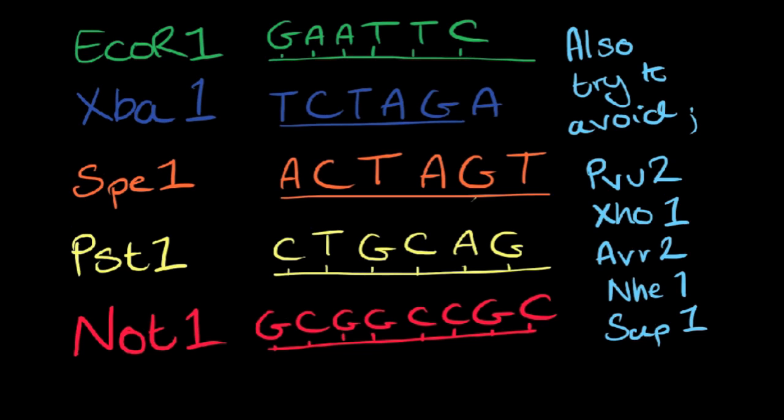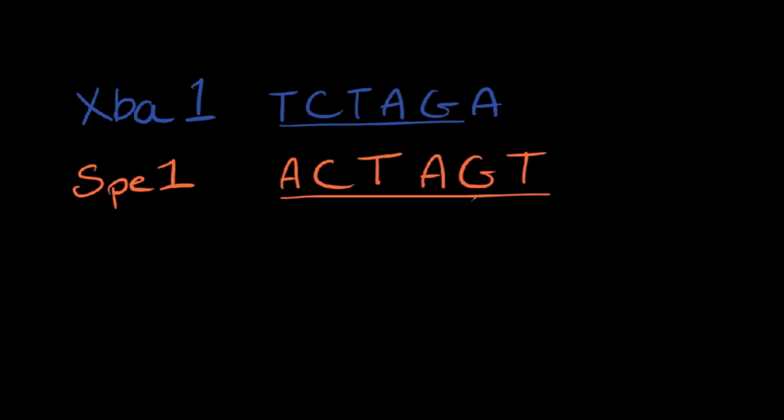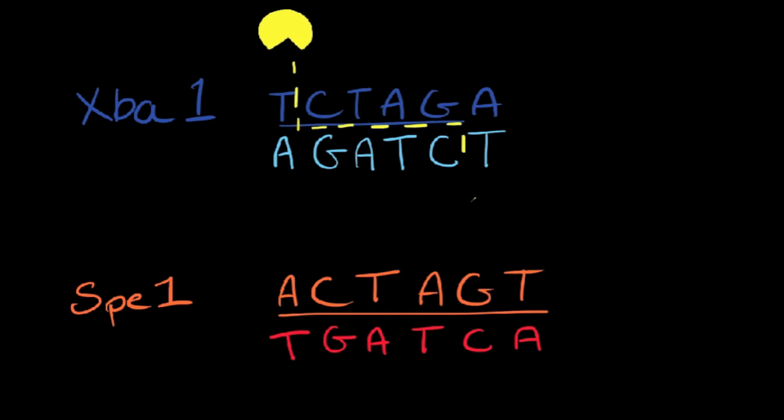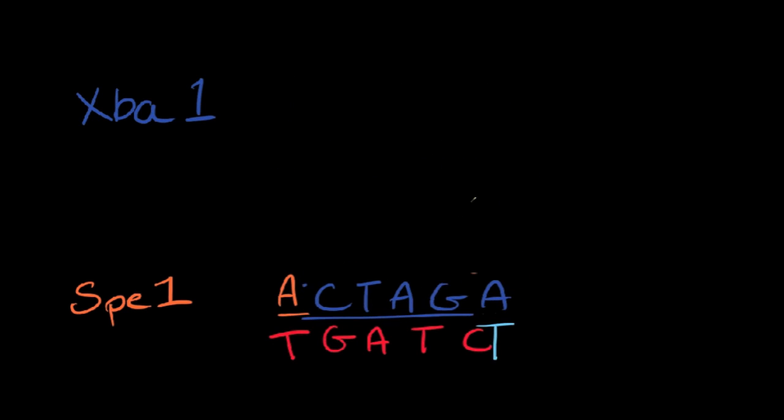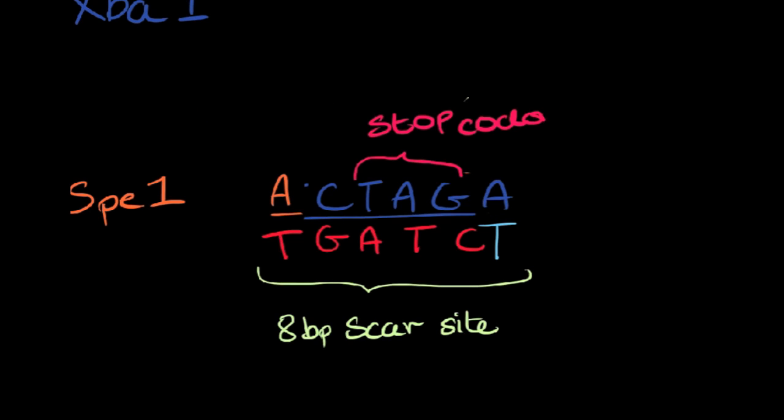This is because these sites are digested away to form the sticky ends for insertion into a plasmid. The most important sites are XbaI and SpeI. These sites hybridize to one another between the insert and plasmid, forming a SCAR site with embedded stop codon TAC, TAG, AG.